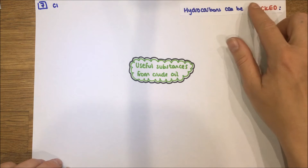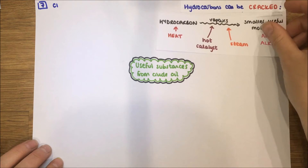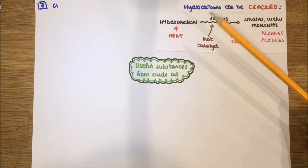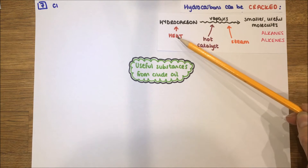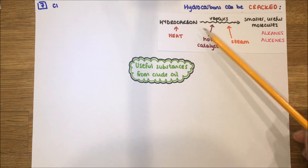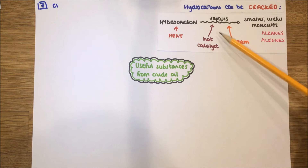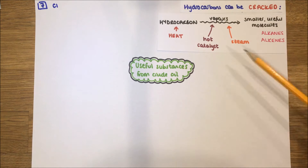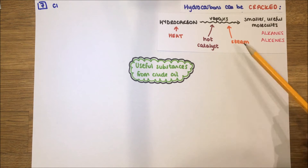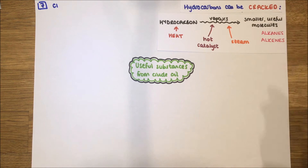To get useful products from crude oil we can crack it into smaller pieces. In order to do that we need certain conditions: we need to heat the hydrocarbon to a very high temperature and vaporize it. We then need to either pass it over a very hot catalyst or use steam — either of those two gives suitable conditions for cracking.